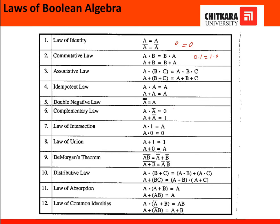Next is the idempotent law, which says that a·a equals a, meaning 0·0 equals 0. Similarly, a+a equals a. We cannot write 2a or a-squared. So 1+1 is 1, and 0·0 is 0, and 1·1 is again 1.